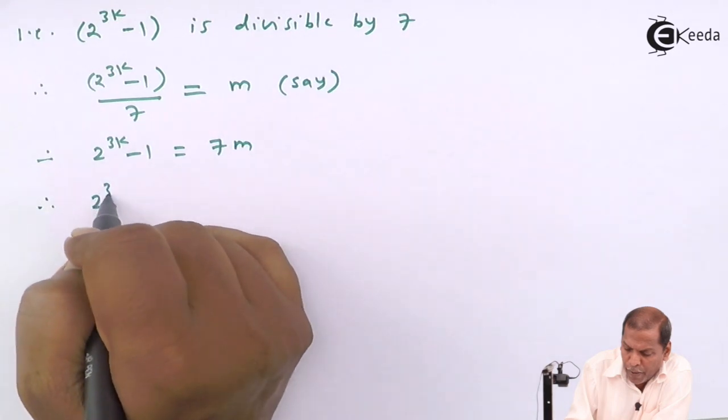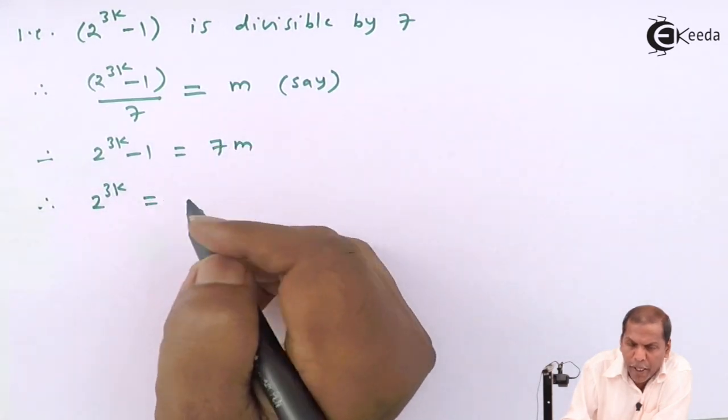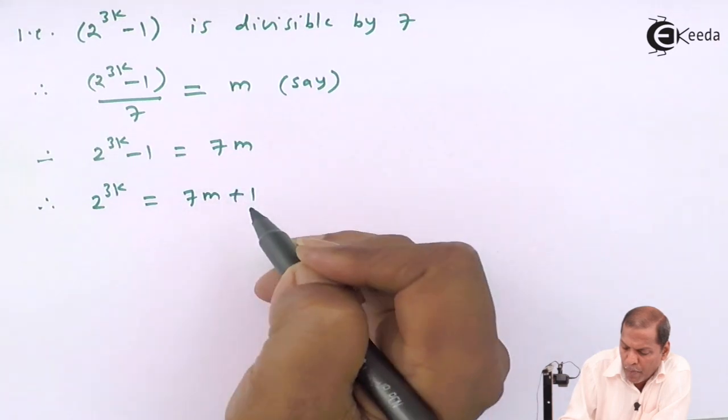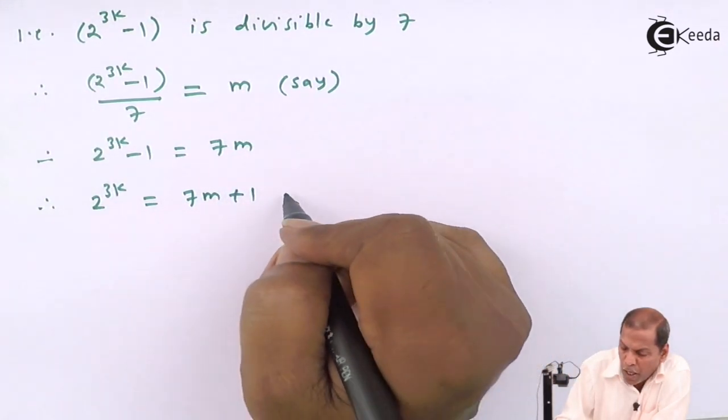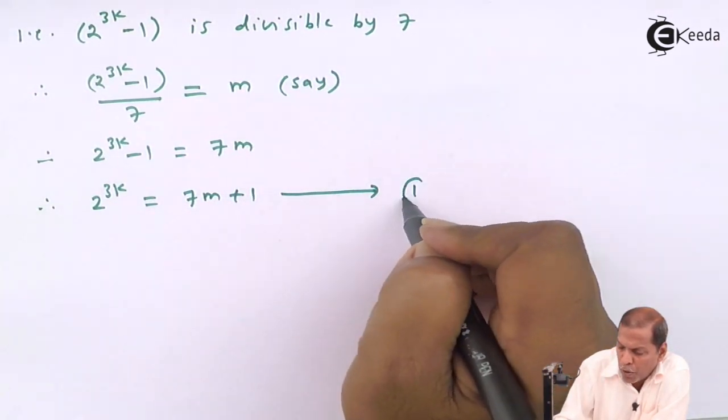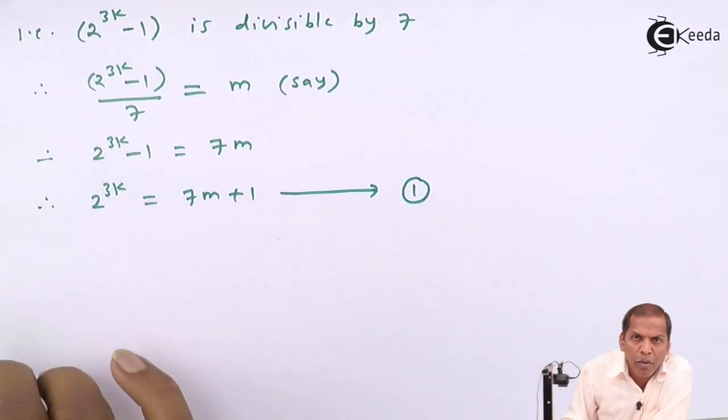The next step will be 2 raised to 3k equals 7m plus 1. Let us denote this as equation number 1.